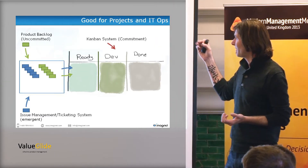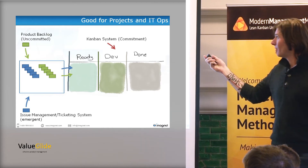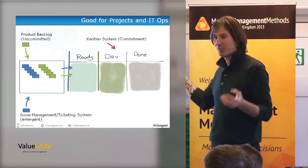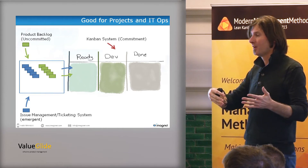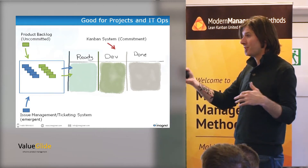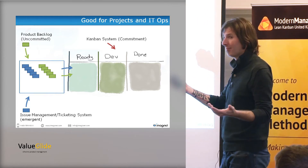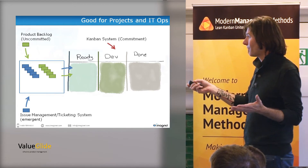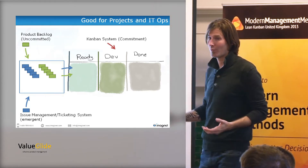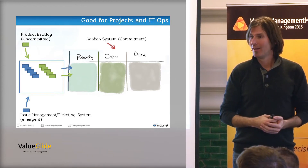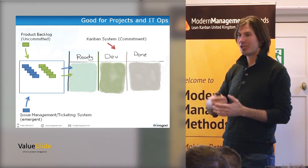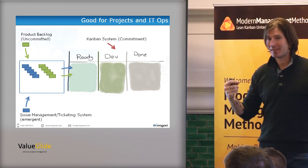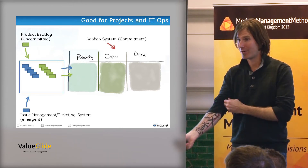Here's a really simple Kanban system: I'm doing something, I'm done. Here's a product backlog — uncommitted work, not in the Kanban system, just a big pile of good stuff. It's going to be prioritized. I just need to, once every two weeks, replenish my ready queue. It flows through to done. It works really well for issue management or ticket management where we have a lot of emergent work — it goes into the same backlog, gets prioritized amongst project work, and flows through the system.